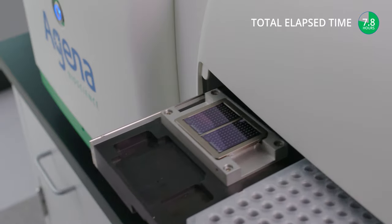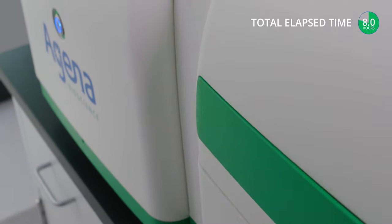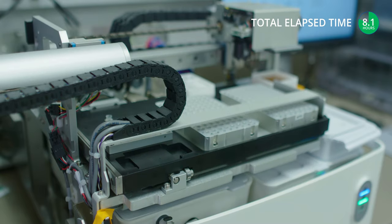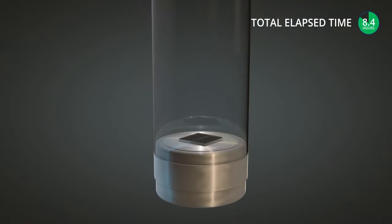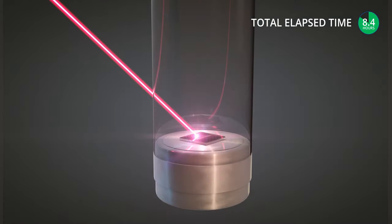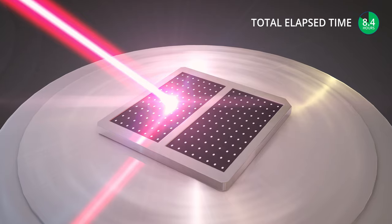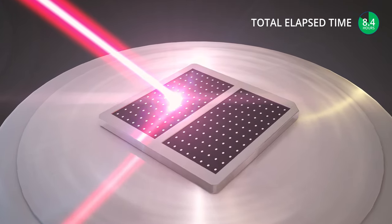Next, the plate is inserted into the mass array system, and the device transfers the sample onto the chip where the DNA extension products, or analytes, crystallize onto the matrix. The analyte crystals are irradiated by a laser, inducing desorption and ionization of the molecules within a vacuum chamber.